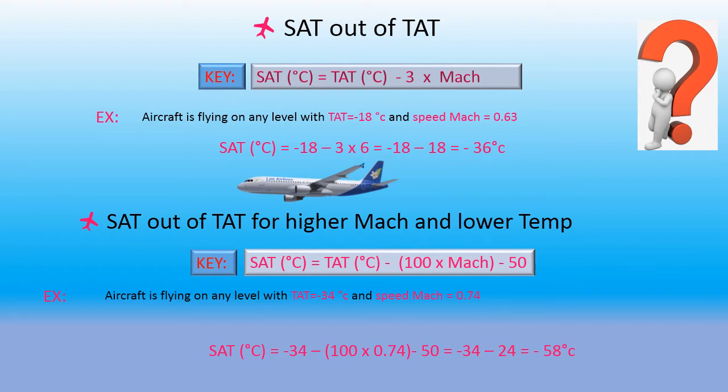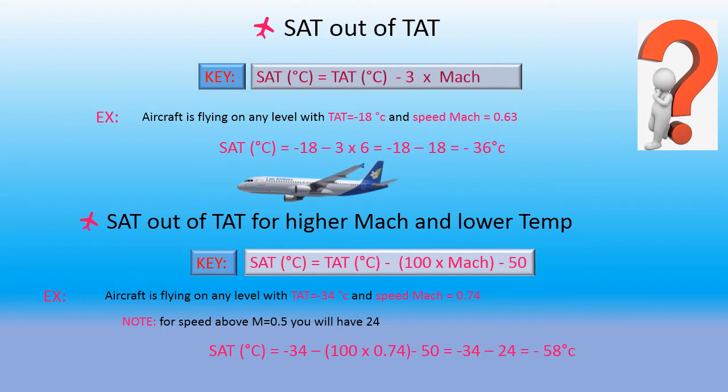So the result equals minus 58 degrees Celsius. For this formula, note one point: for speeds above Mach 0.5, you will have 24. This means you will get 24 at the time for speeds above Mach number, depending on your condition for higher Mach and lower temperature.